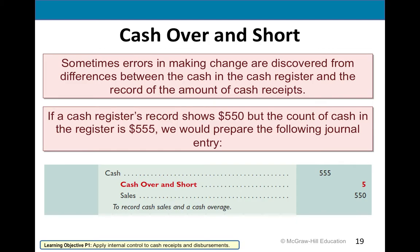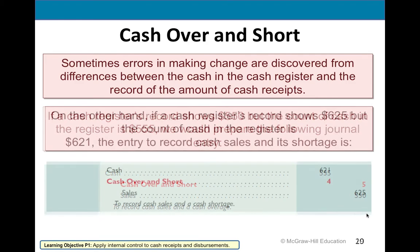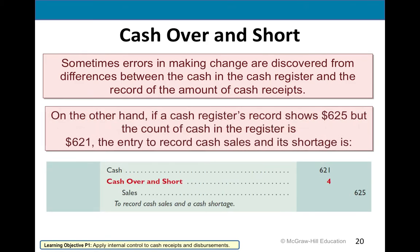You always want to debit cash to increase it by the actual amount, and credit sales by the actual amount, because those are the actual amounts. For the opposite situation — if you should have $625 but you're short $4 — you want to debit cash over and short by $4, then increase cash by the actual cash amount and increase sales by the actual sales amount.